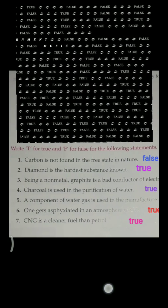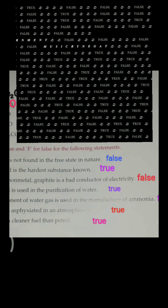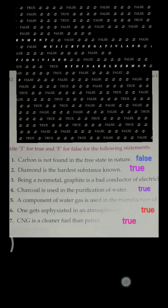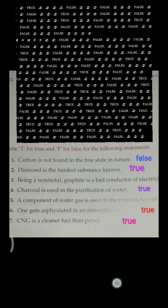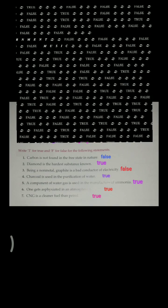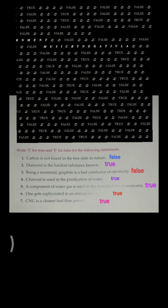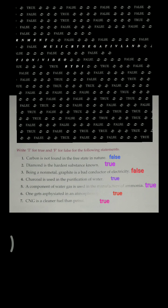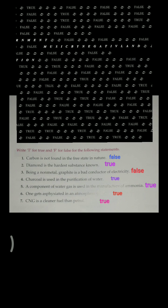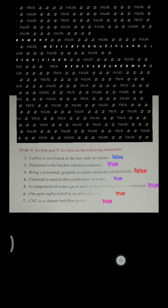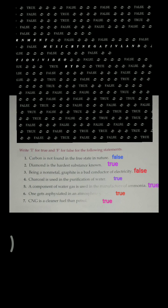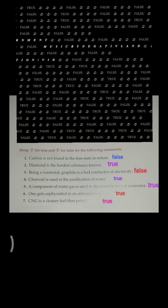Diamond is the hardest substance known - true. Being a non-metal, graphite is a bad conductor of electricity - false. Charcoal is used in purification of water - true. A component of water gas is used in the manufacture of ammonia - true. One gets asphyxiated in an atmosphere of carbon monoxide - true. CNG is a cleaner fuel than petrol - true.